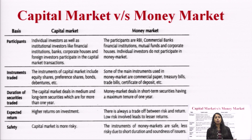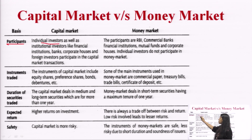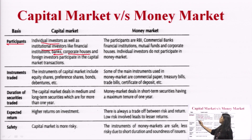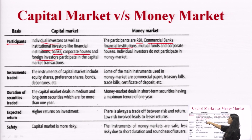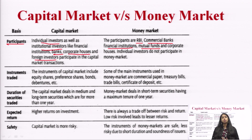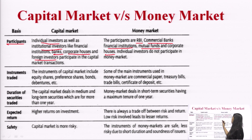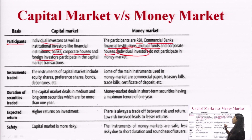The tabular difference between capital market and money market: In terms of participants, capital market has individual investors as well as institutional investors — banks, corporate houses, and foreign investors. In the money market, the main participants are RBI, commercial banks, financial institutions, mutual fund agencies, and corporate houses. The individual investor cannot participate in the money market — only in the capital market.